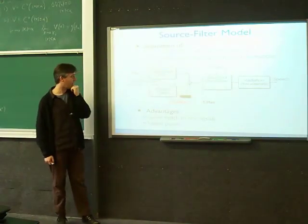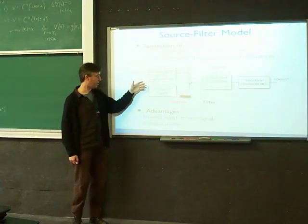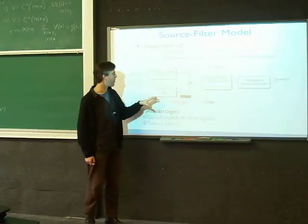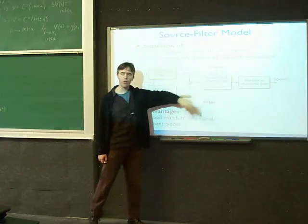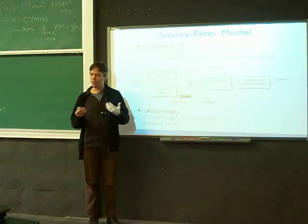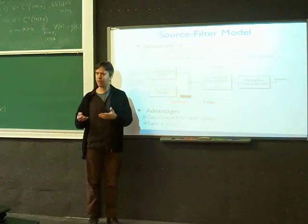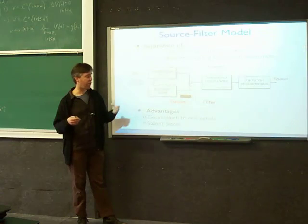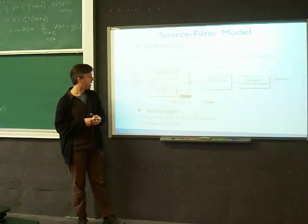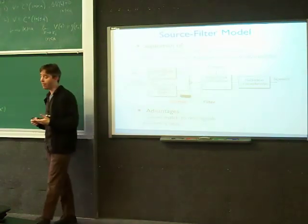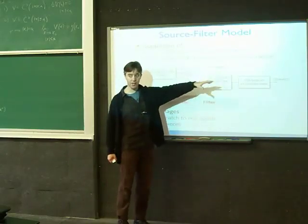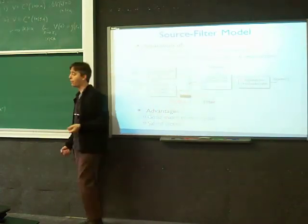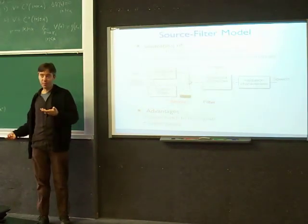Then you have this resonant filter — the vocal tract filter — well modeled as just a set of poles, a set of resonances, plus some other fixed filtering from radiation. The interesting parts are the resonances that change in time and that listeners are very sensitive to, partly because we've evolved to be good at understanding speech, and partly because resonances are ubiquitous in physical systems. The source-filter model has several advantages: it's a good match to real-world sounds, particularly voice, and it's computationally very efficient — a single pair of poles requires just two multiplies and adds.